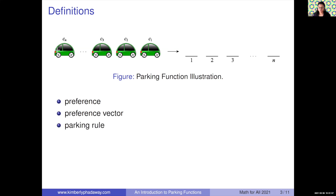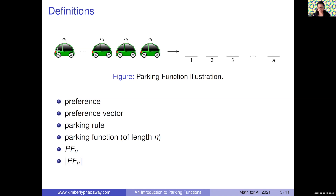We also have to define our parking rule — how do the cars park. In the classical scenario, the parking rule states that each car drives to its preferred parking spot; if it's open, it parks there, and if it's occupied, it takes the next available spot. If a car wants a spot but that spot and all spots after it are filled, the car cannot park. If our preference vector does allow all the cars to park, we call it a parking function of length N, where N denotes the number of spots as well as the number of cars. We use PF_N to denote the set of all parking functions of length N, and |PF_N| asks how many parking functions of length N there are.